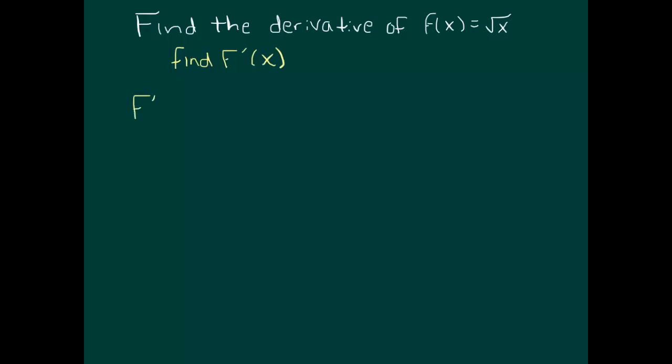So f prime of x is equal to the limit as h goes to 0, f of x plus h minus f of x over h.